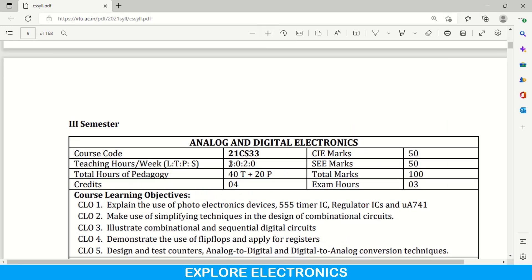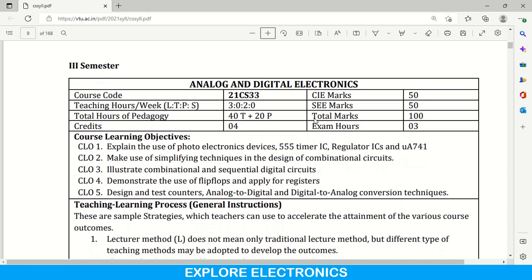So per week, you will be having three hours of theory classes with that two sessions of labs will be conducted. So in the same subject with code 21 CS 33, the theory as well as practical part will be covered here. You can see here 40 theory class hours plus 20 practical hours will be conducted. But CIE and SCE marks will be 50-50 and total marks is 100 and SCE exam will be for 3 hours. So let us see how this practical and theory classes will be divided and that will be covered in CIE and SCE.